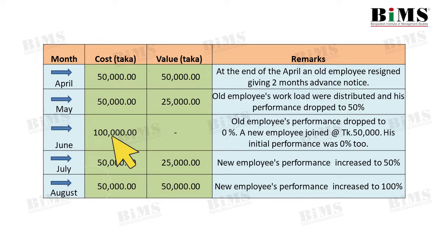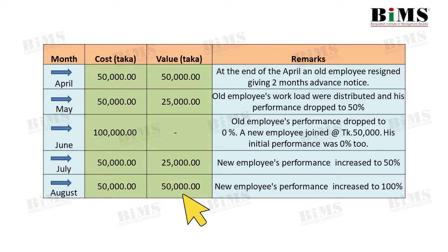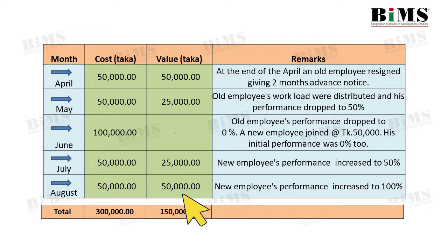Julai maashe ke notun employee starts being productive, and say, he generates a value of 25,000 tawaka. And August onwards, he starts performing to his full potential, which is 50,000. So if we sum it up, we see that cost to the company is 300,000, but value that is being generated is 150,000.